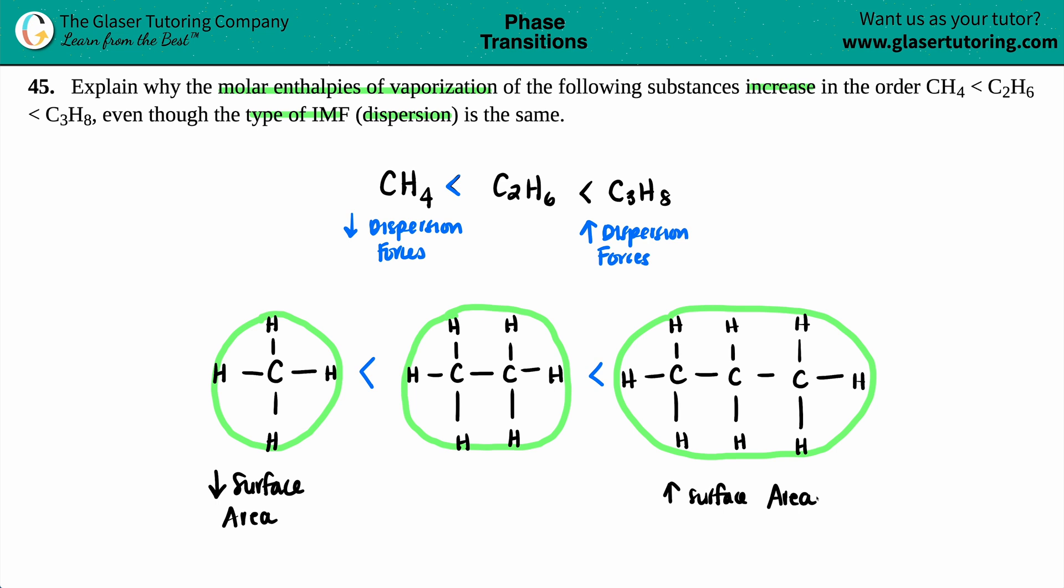Now, one of the reasons is that the less surface area that you have to cover, the less amount of dispersion forces. And that's why you have the lowest molar enthalpy of vaporization. If you have the least surface area, it's very easy to convert to a gas because you don't have a lot of space to cover.